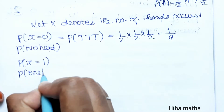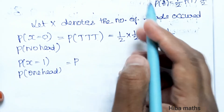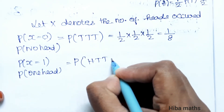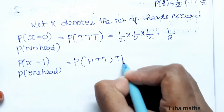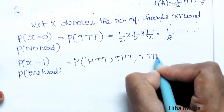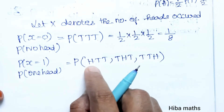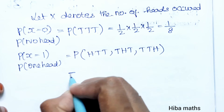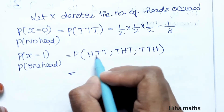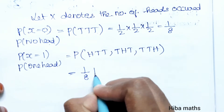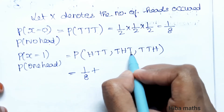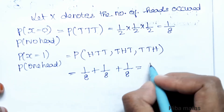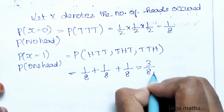P(X = 1): exactly one head. The outcomes are HTT, THT, and TTH. Each has probability 1/8, so P(X = 1) = 1/8 + 1/8 + 1/8 = 3/8.